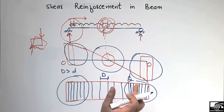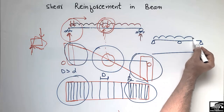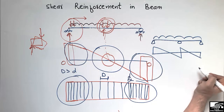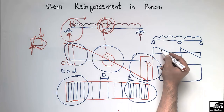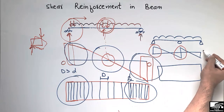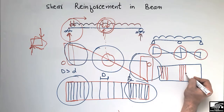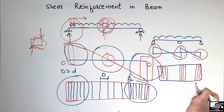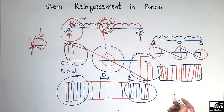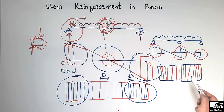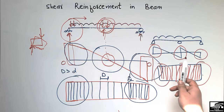A similar approach applies to a three-point support beam. Due to the load acting on this beam, shear forces are high at each support point. So you provide reinforcement at a smaller distance at each support location, while in the middle spans you provide stirrups at a normal, larger spacing. This is the way of distributing stirrups along the length of the beam — smaller distance where demand is high, and larger spacing where shear demand is low.